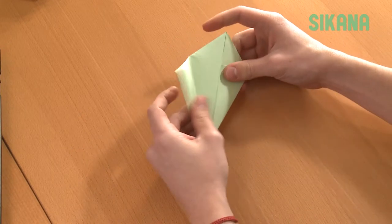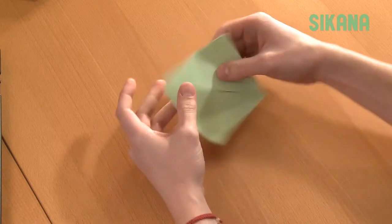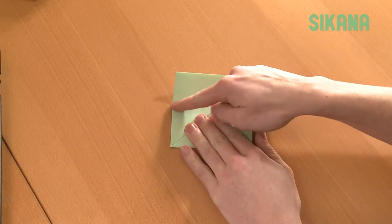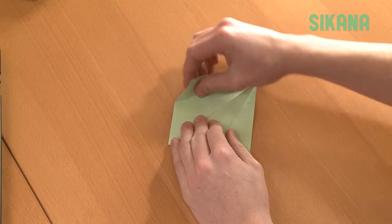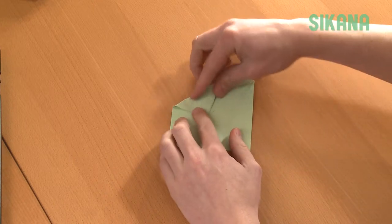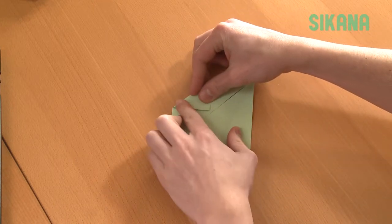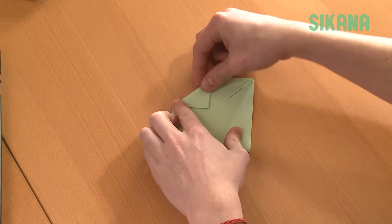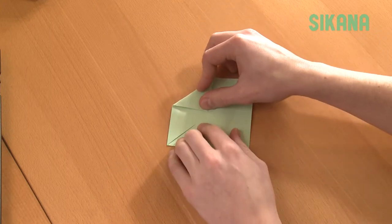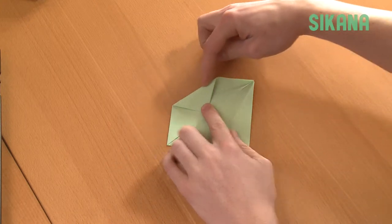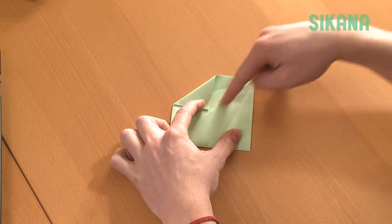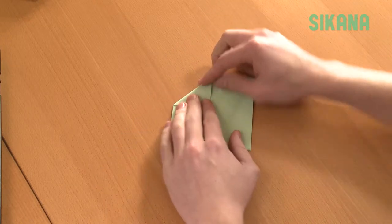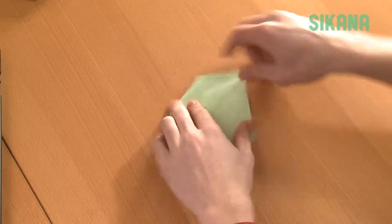Open and use the crease to fold the tip down. This part must be parallel to this one. Do the same on the other side.